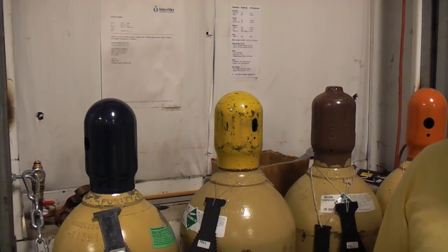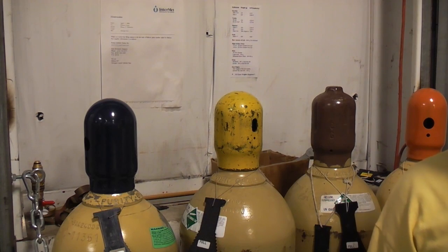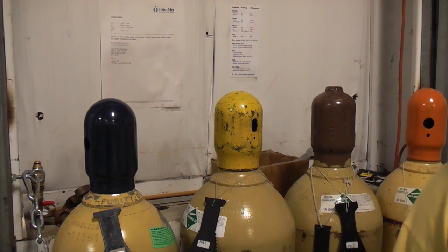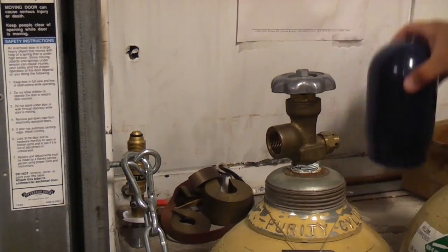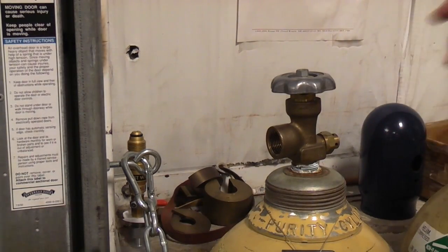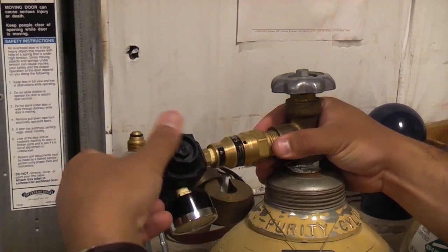Step four is to connect the regulator assembly to the helium tank, then connect the input hose to the output of the regulator. Remove the safety cap and connect the regulator assembly.